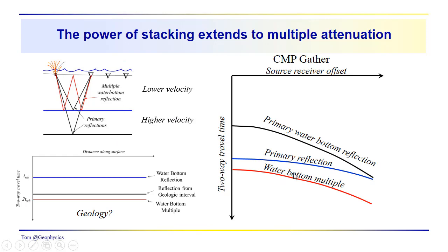We see a higher velocity primary reflection coming in from some deeper layer. And then we see the water bottom multiple. It has a velocity which is lower than this primary reflection here.